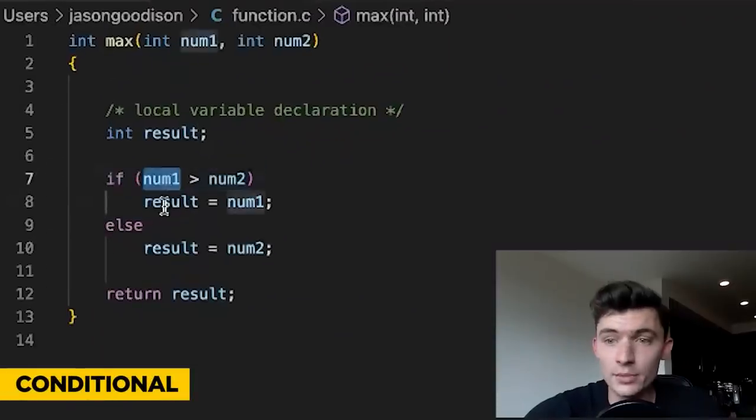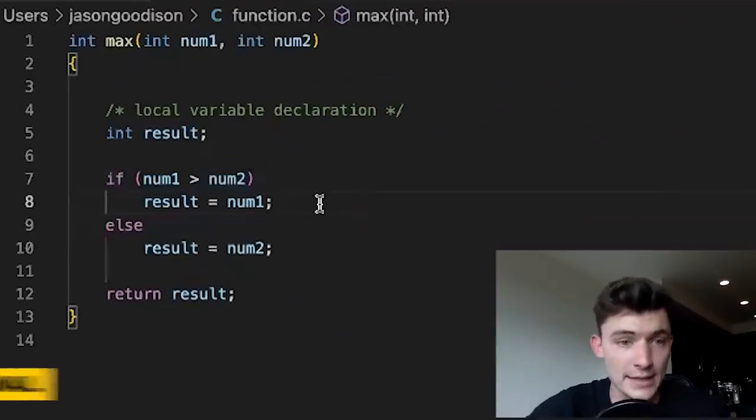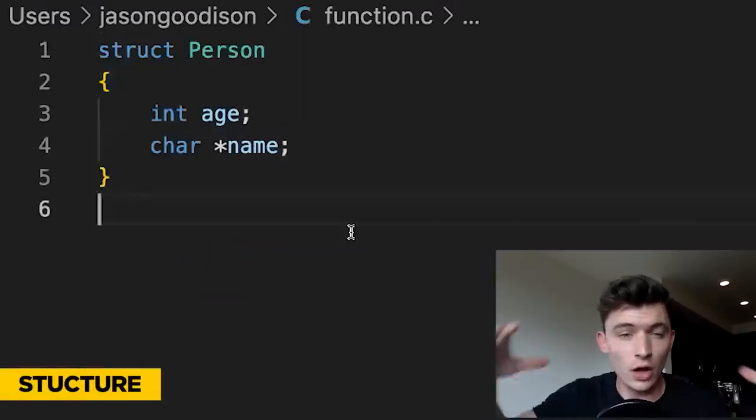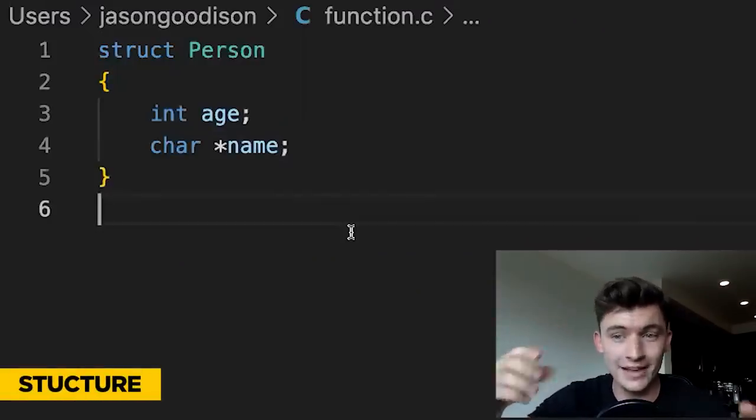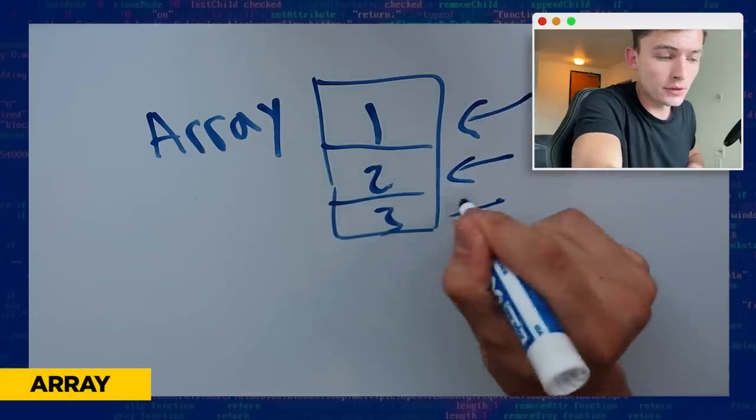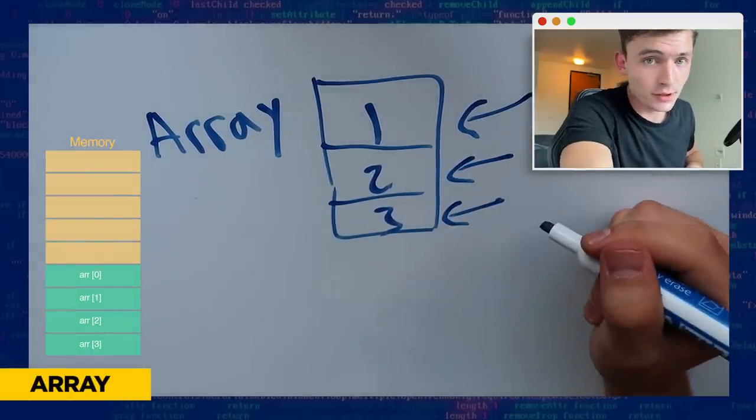Conditionals will check variables and run different code depending on what the value of those variables is. Loops check some condition and they keep repeating until that condition is met. Structures logically store some information together to make it easier to access. For example, person has a name and has an age. Arrays are essentially just lists of variables. We can overwrite any one of these values, and they sit next to each other in storage.